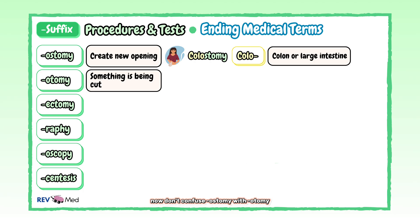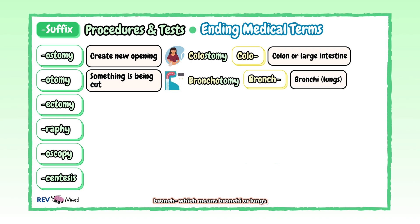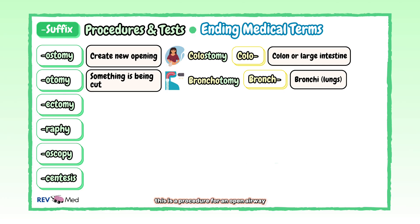Now don't confuse "-ostomy" with "-otomy". "-Otomy" means to make an incision or cut into something. Here let's use another previous root word — "bronch" — which means bronchi or lungs. Our example is bronchotomy, which is a procedure for an open airway between a patient's lung and the outside world.